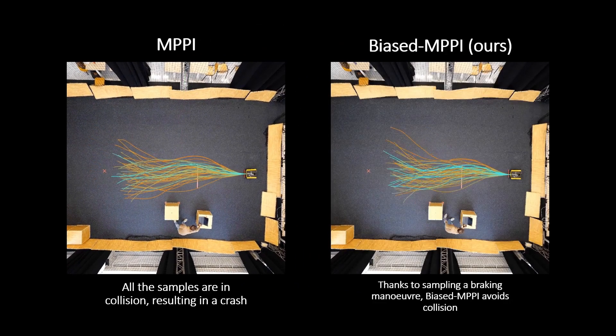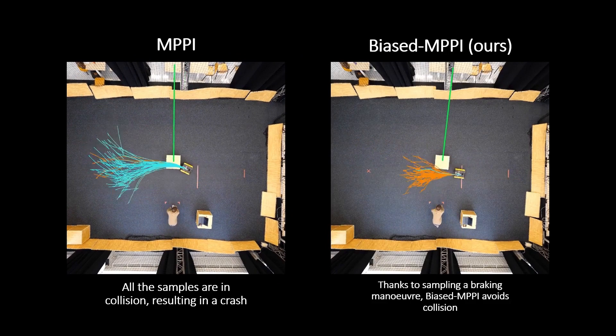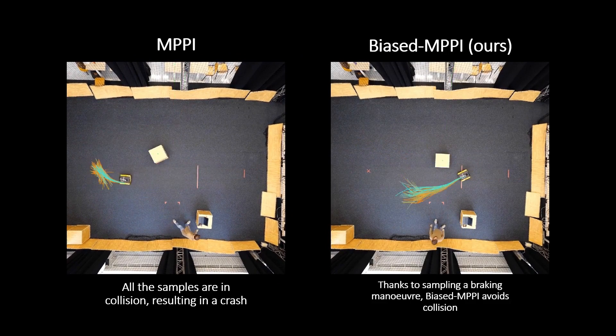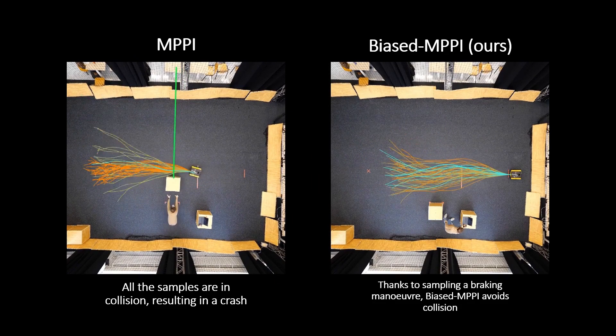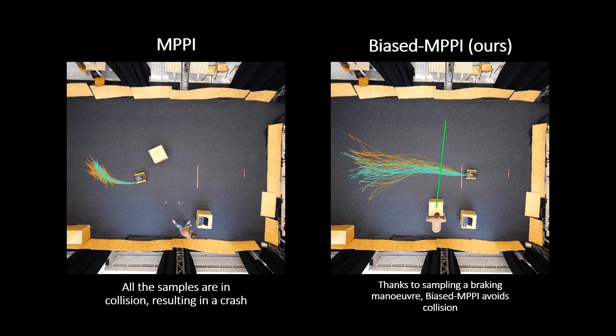On the left, classic MPPI only takes samples that are in collision with the box, resulting in a crash. On the right, biased MPPI samples a zero-velocity braking maneuver and quickly converges to it when the box is thrown, avoiding collision.